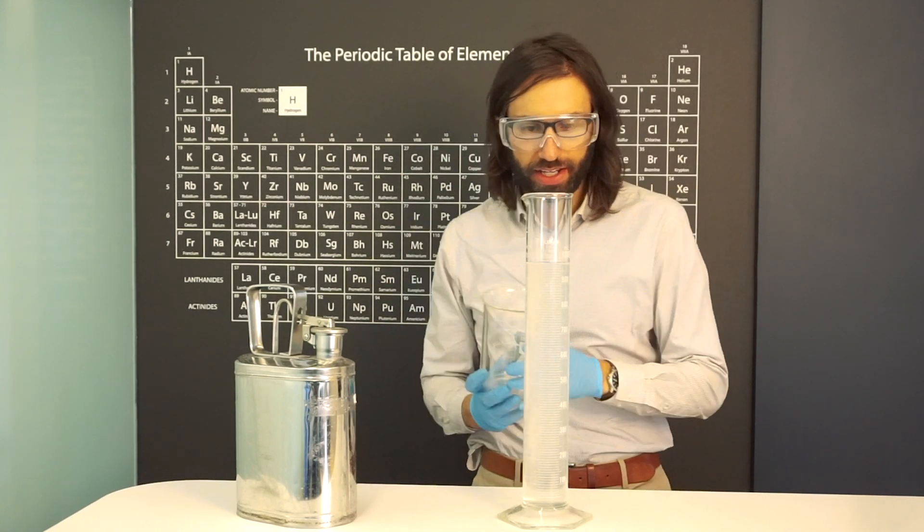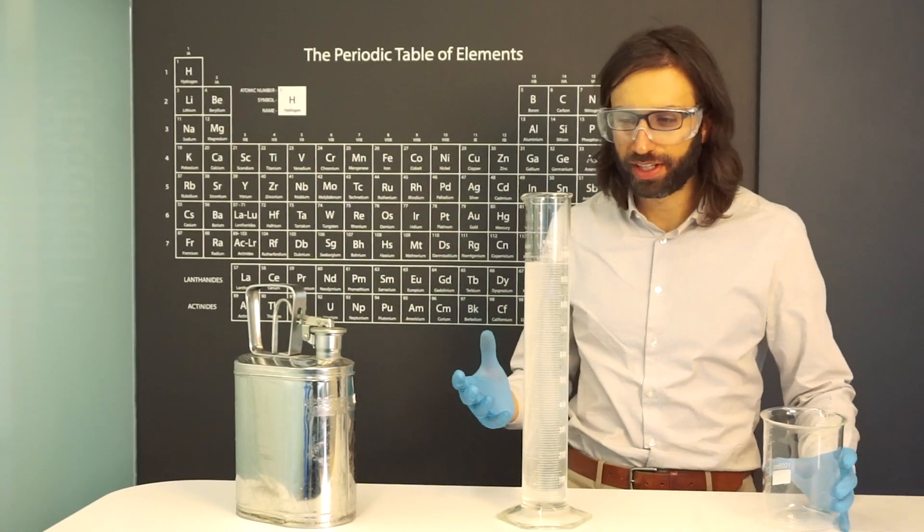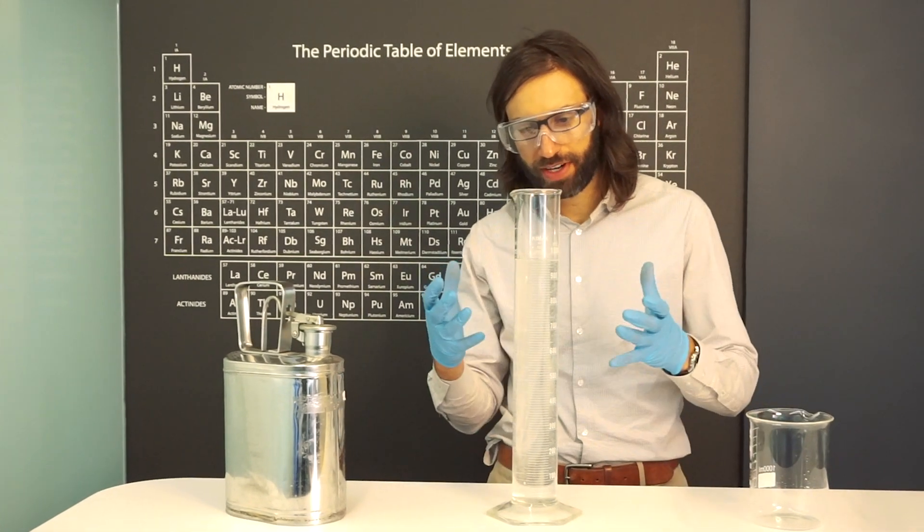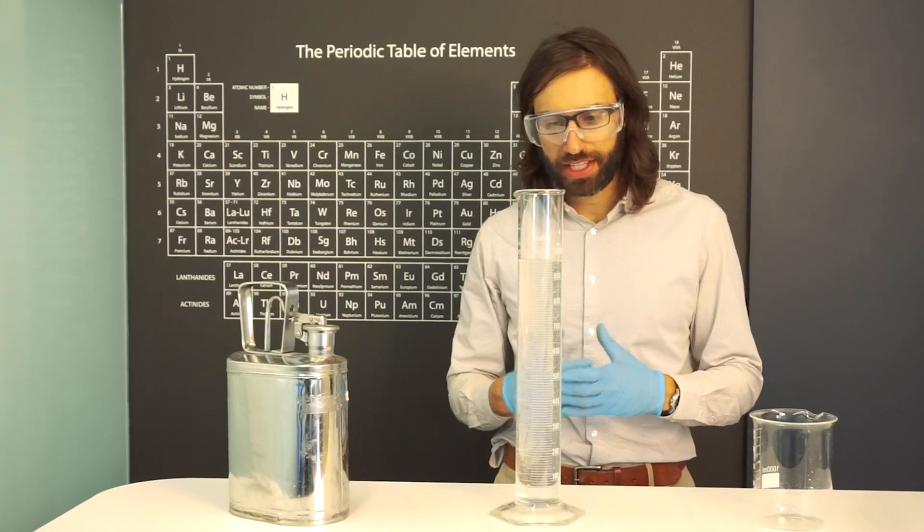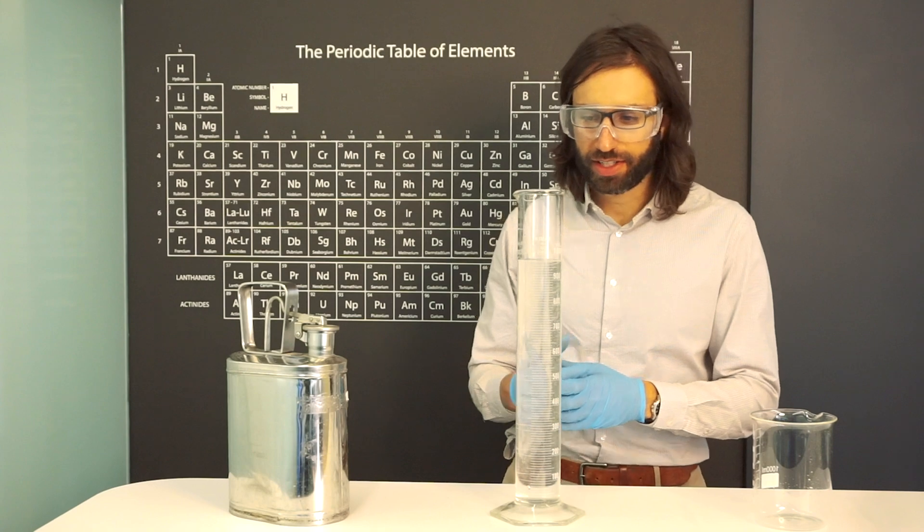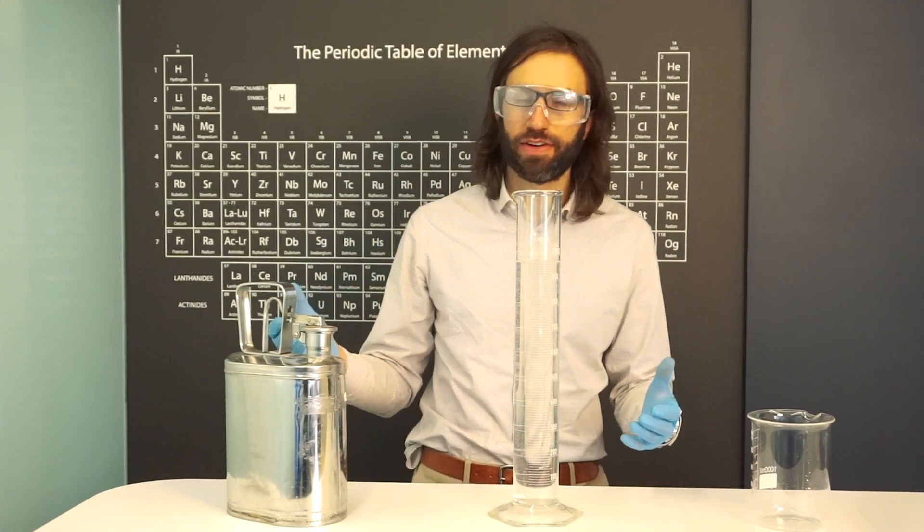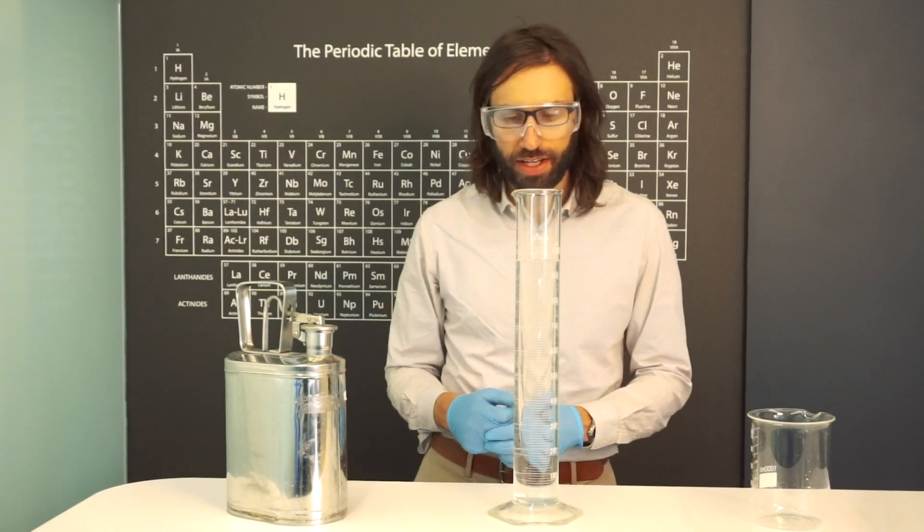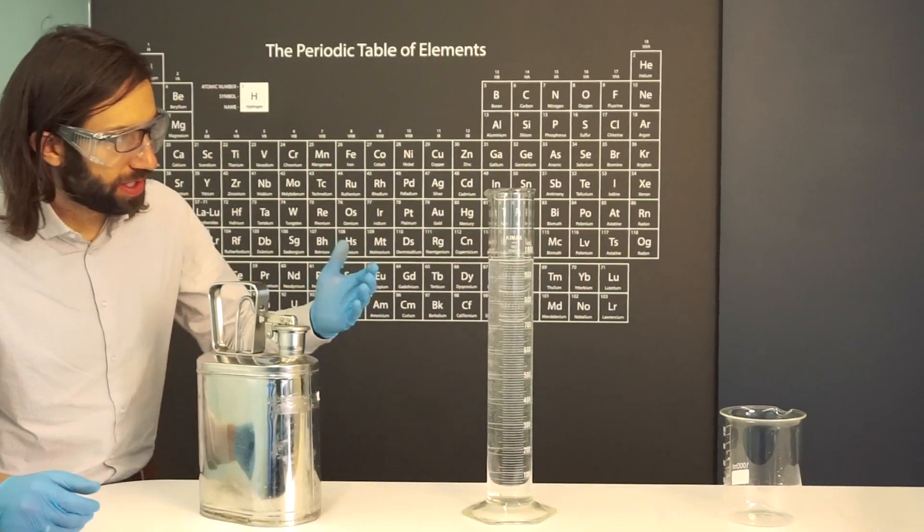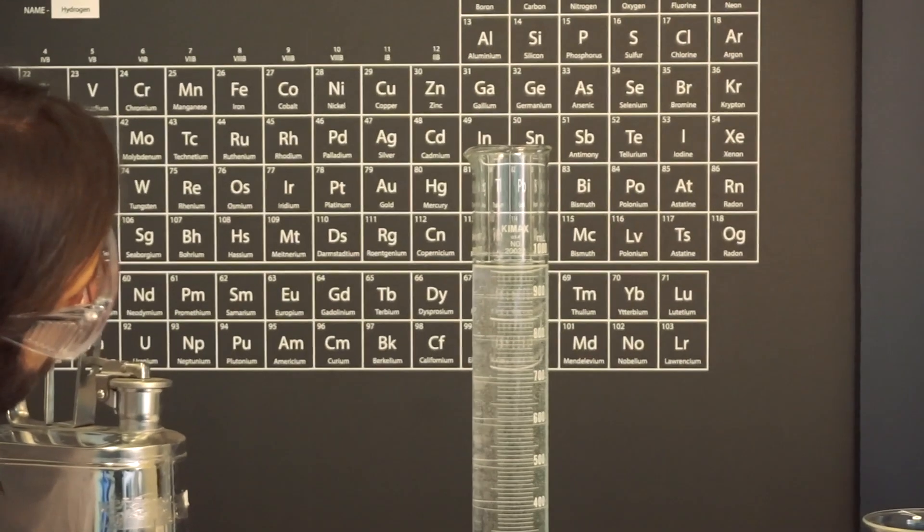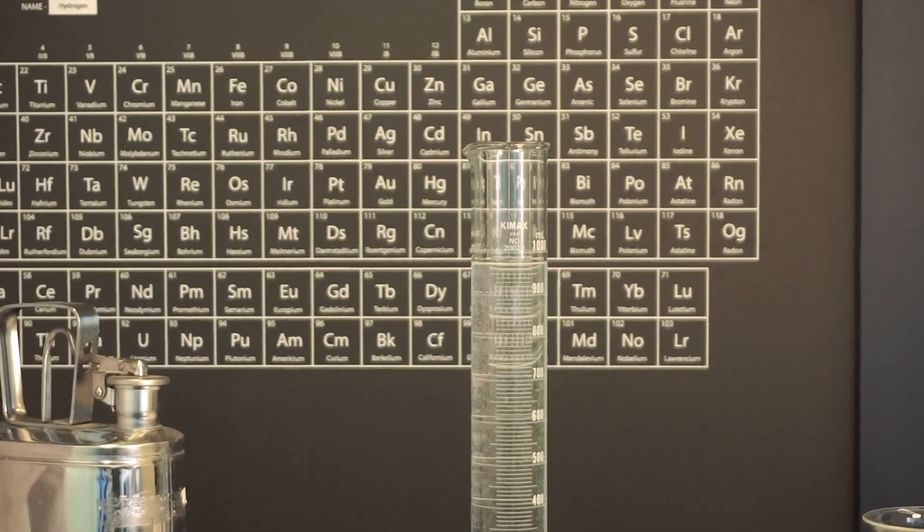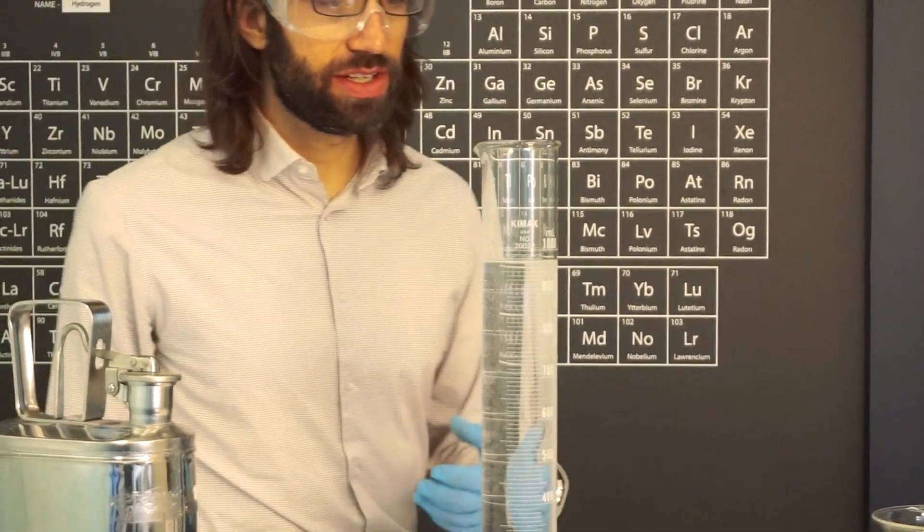But here's the crazy thing. It's not that exciting mixing two clear liquids, but what is very interesting is that the total volume is clearly less than a thousand milliliters, one liter. We have 500 milliliters of water, 500 milliliters of ethanol, and we ended up with 970 milliliters of solution total.